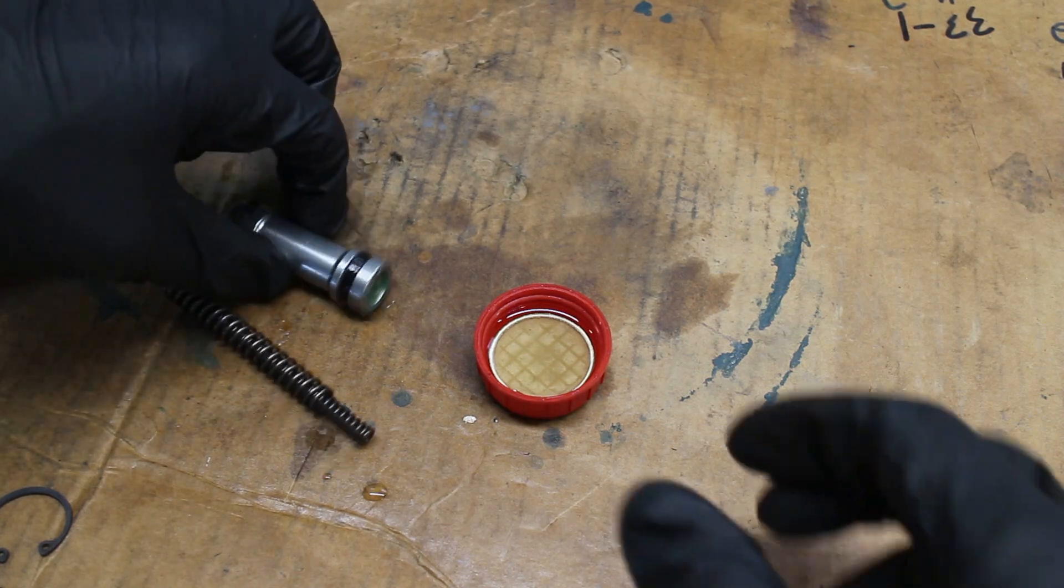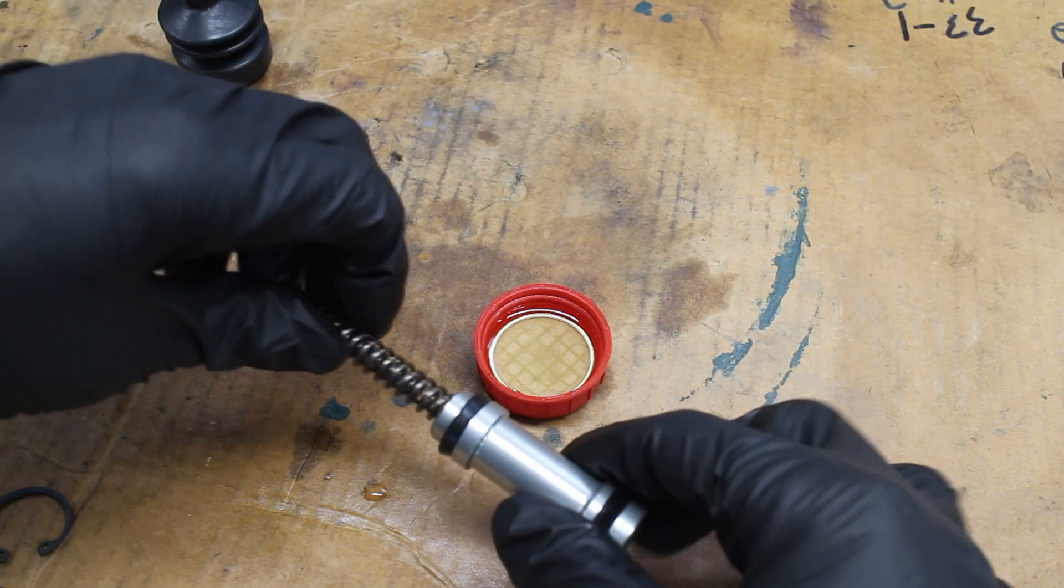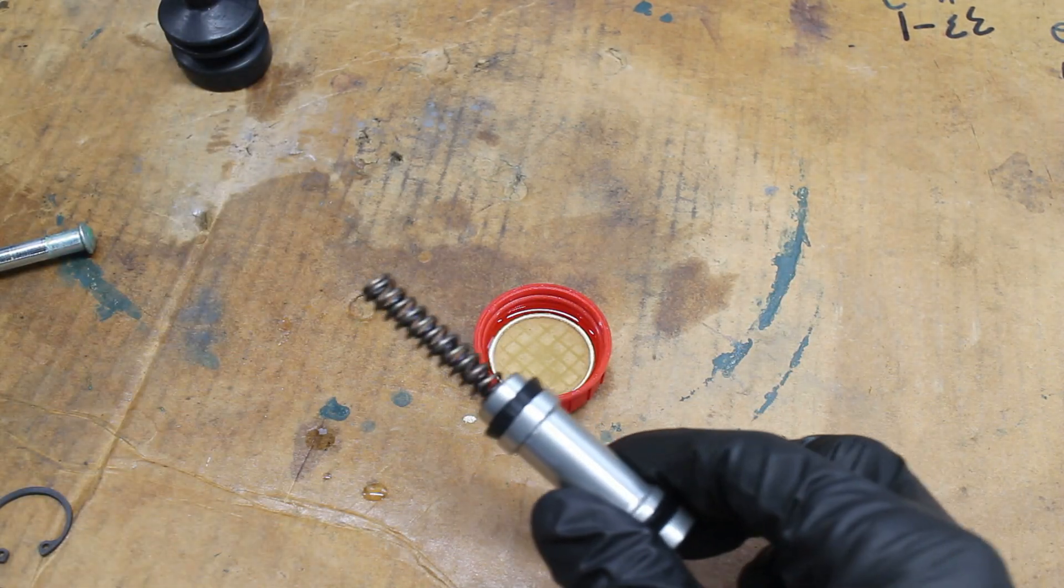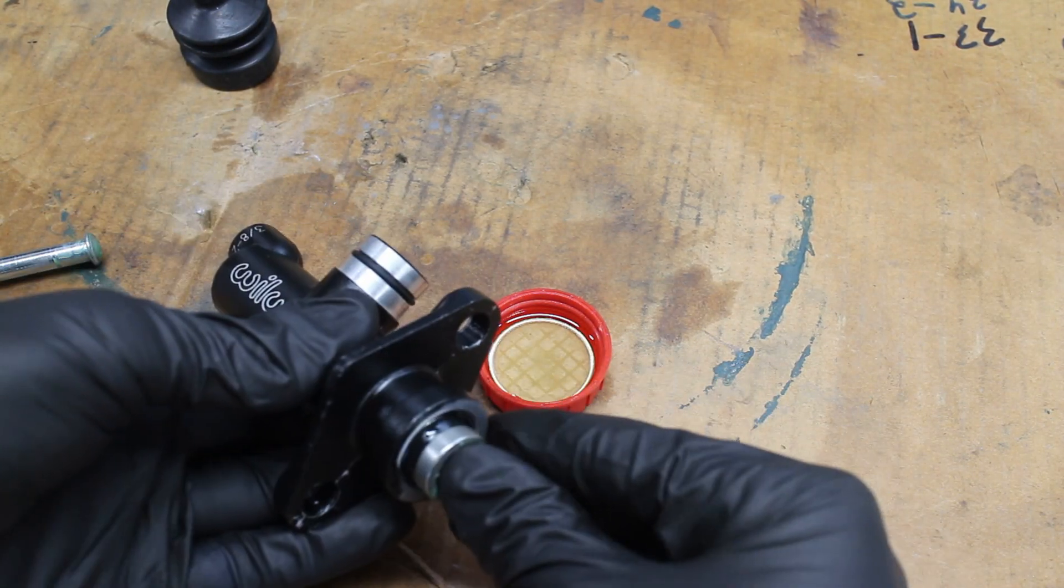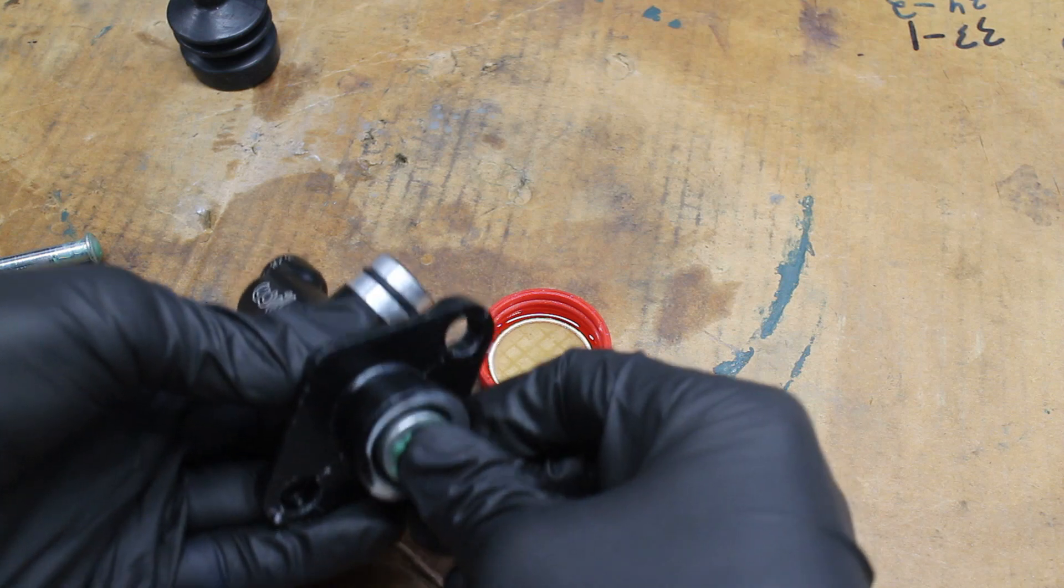The two springs go inside of the piston. Then the piston gets pushed inside of the master bore. Be careful to avoid damaging any seals while doing this.